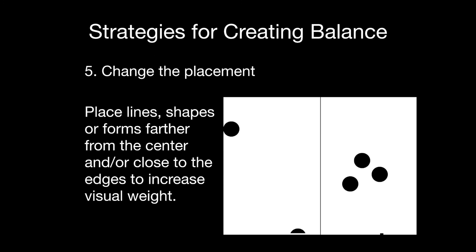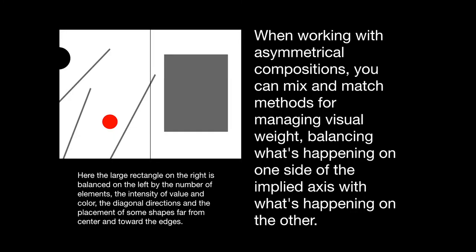Last but not least, you can change the placement of things. Lines, shapes, and forms that are further from the center — especially in a 3D composition if something's way out from the center, or in a 2D composition if it's right at the edge — will increase the visual weight. People always think about the center as the bullseye, and the exact center does have a certain degree of visual weight. But way out at the edge, our eye doesn't expect that and it tends to get pulled there. So the bottom line is: when working with asymmetrical compositions, mix and match those five methods for managing visual weight so that one side of your composition is equalized to the other side, even though they're different — their overall visual weight feels the same.